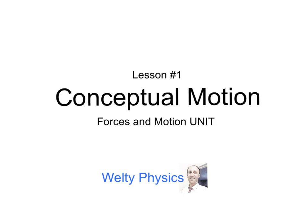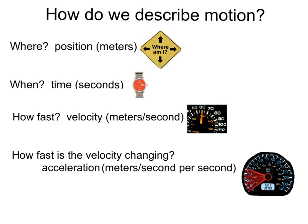Lesson number one: conceptual motion. How do we describe motion? To describe the motion of an object, we need to answer four questions. First question being, where? Where is the object located? What is its position? We can measure that position in meters. We use the variable x to represent the position of an object.